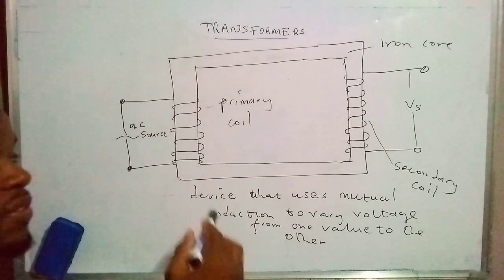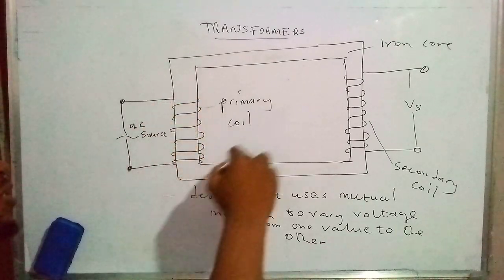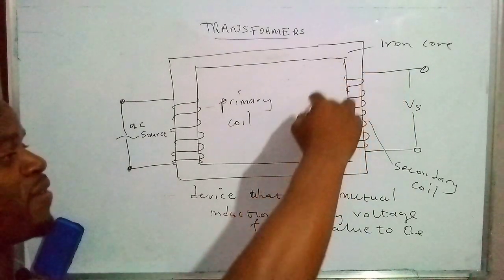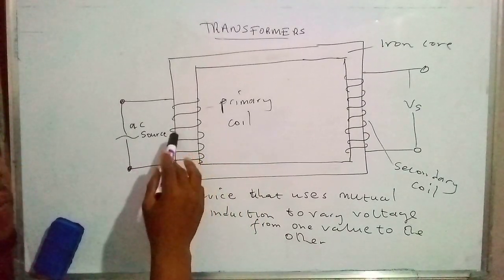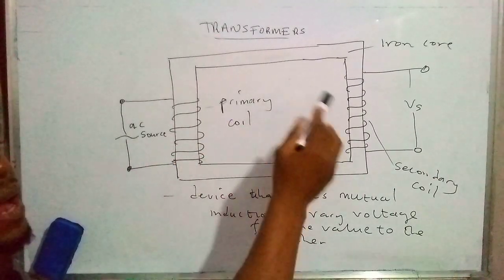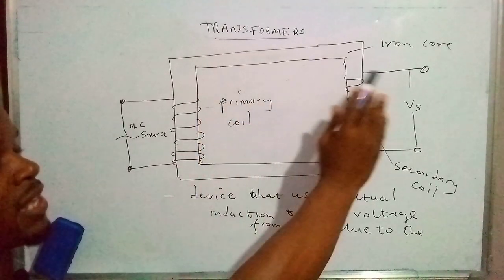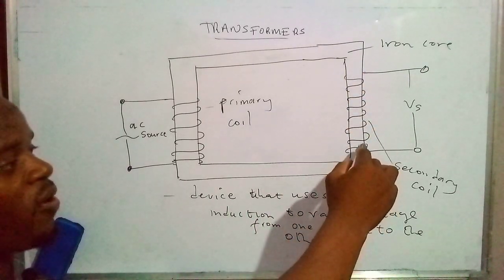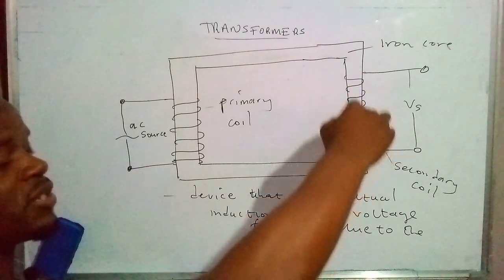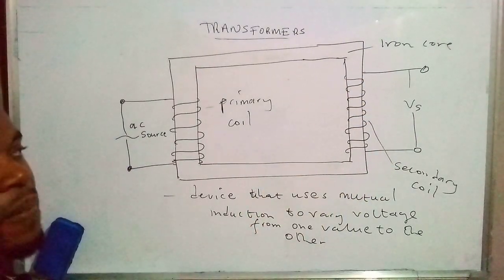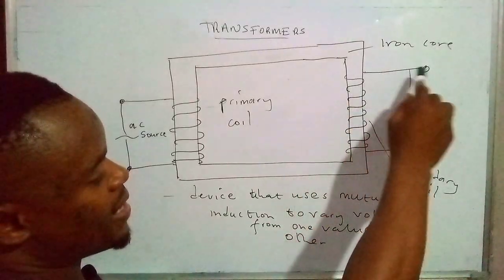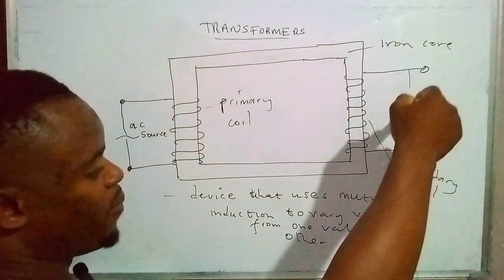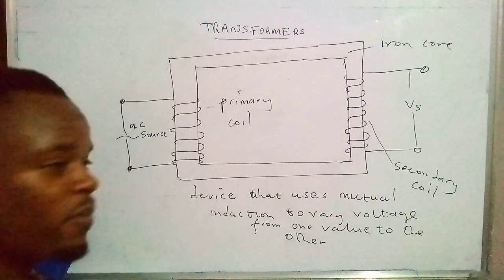The magnetic field formed around the primary coil extends up to the far end, covering the secondary coil. Because there is alternating current, the magnetic flux keeps on changing — extending back and forth. The magnetic field lines keep on cutting the secondary coil, inducing an electromotive force, which brings about the flow of current used to power the appliances connected at the far end.